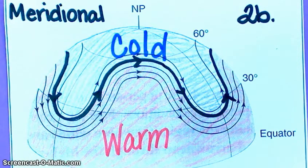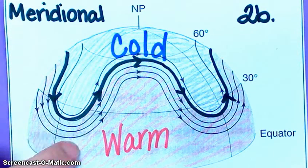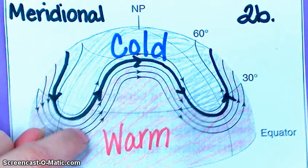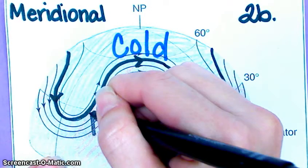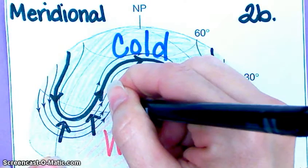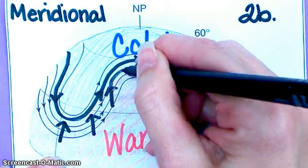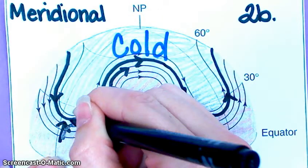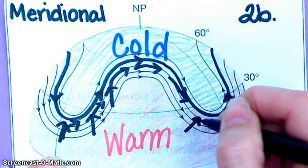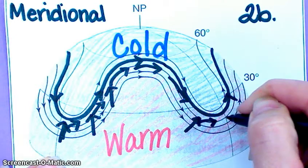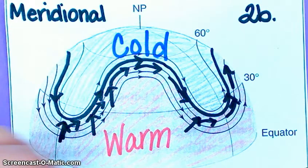A horizontal pressure gradient is directed across the front from the warm side to the cold side. This is our polar front: warm air is here, cold air is here. We've got higher pressure here at a certain altitude than over here, so the winds are going to attempt to go from warm to cold. But the Earth is spinning, so these winds quickly get deflected to the right in the Northern Hemisphere. That's why they wind up flowing along that boundary rather than across it.